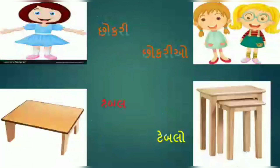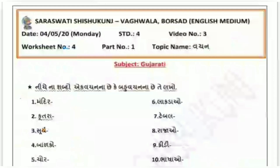બહુ વચનમાં મોટા ભાગના શબ્દો પાછળ 'ઓ' માત્રાનો ઉપયોગ થાય છે. Now students, whatever we have discussed today, I hope you have understood it. So now, we have discussed our worksheet that you have today — complete. પ્રશ્ન નંબર એક: નીચેના શબ્દ એક વચનમાં છે કે બહુ વચનમાં, તે લખો. નીચે અમુક શબ્દ આપેલ છે, તો તમારે એને ધ્યાનથી જોવાનાં છે અને સમજવાનું છે — આ શબ્દ કયા વચનમાં છે?